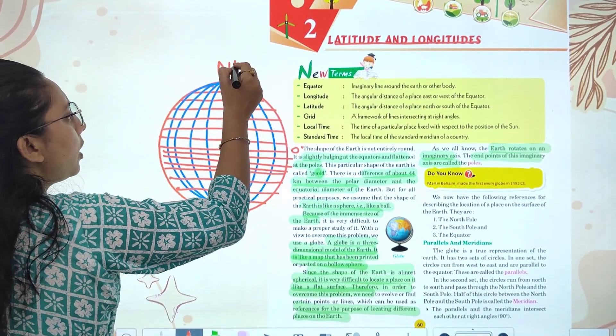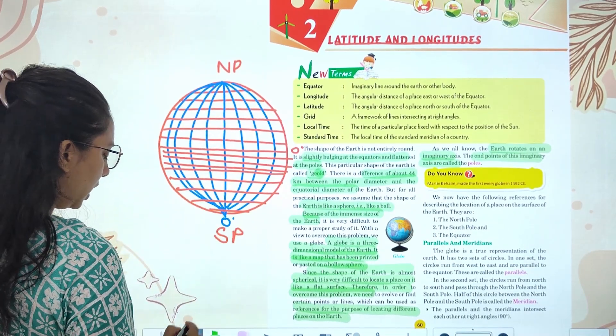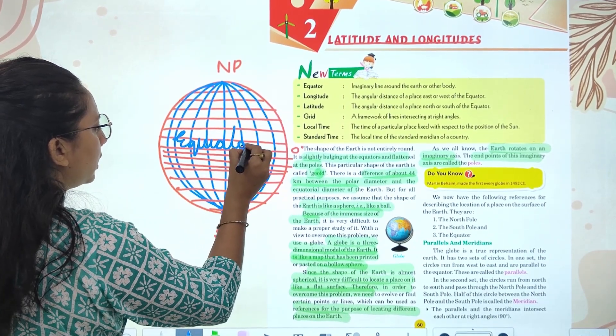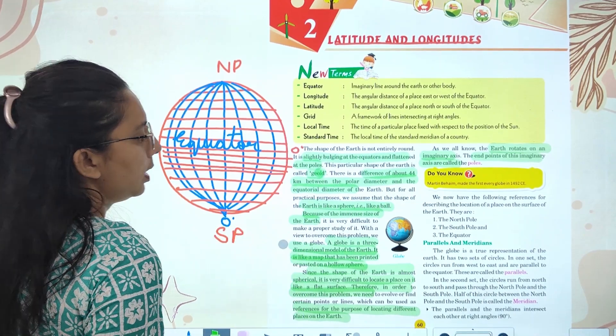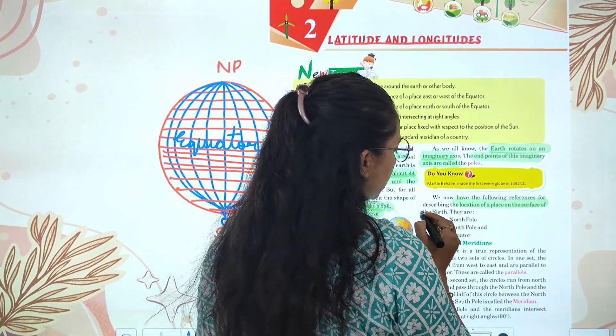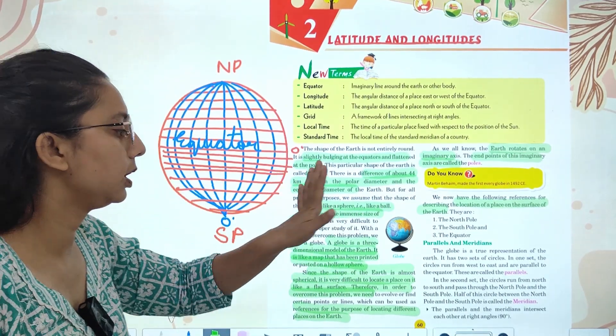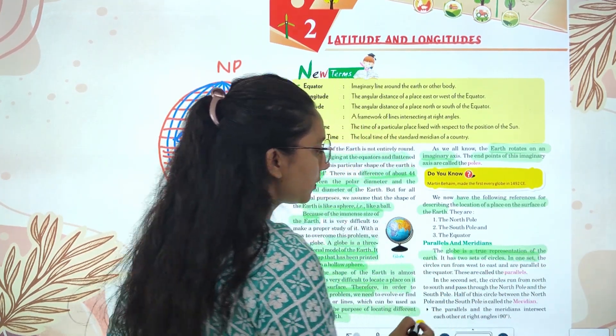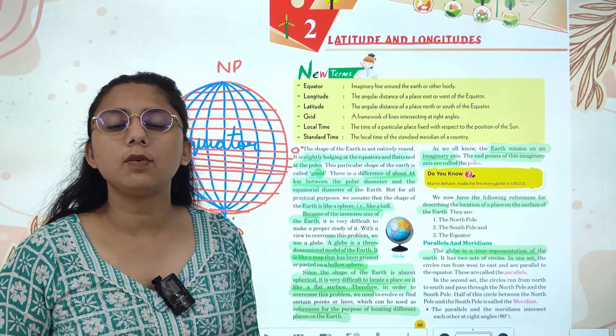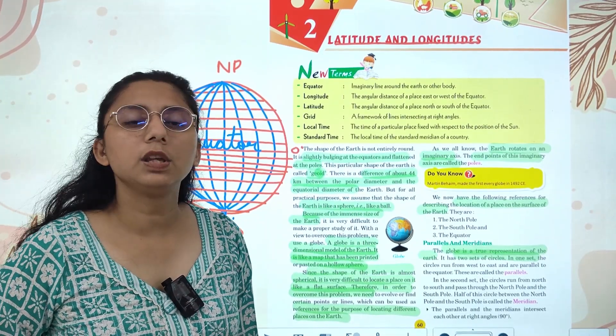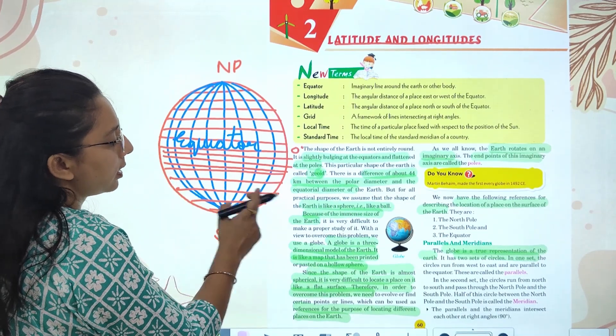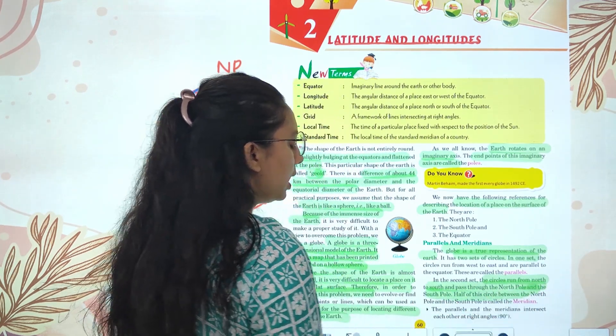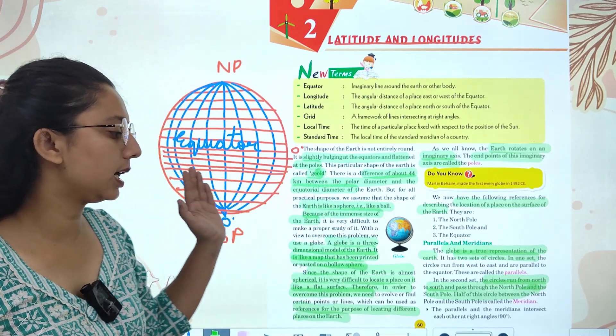This is your north pole and this is your south pole. For describing the location of places, one set of imaginary lines runs parallel to the equator from west to east, and we call it parallels. The second set is from north to south, from north pole to south pole. Half of the circle between north pole and south pole is called meridian.